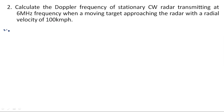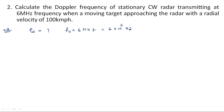Moving to the second example: calculate the Doppler frequency fd for a stationary radar. The Doppler frequency component can be generated when either the source or the observer is in motion. Here, a stationary radar system is transmitting at f0 = 6 MHz = 6 × 10^6 Hz.